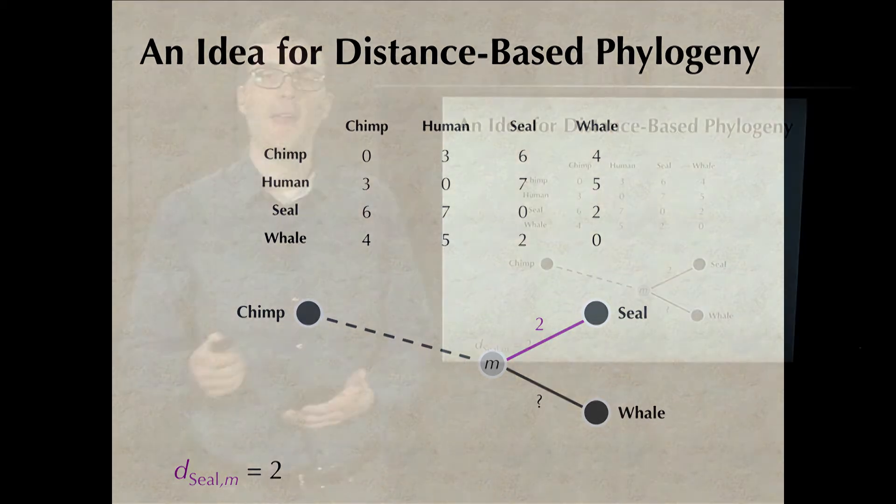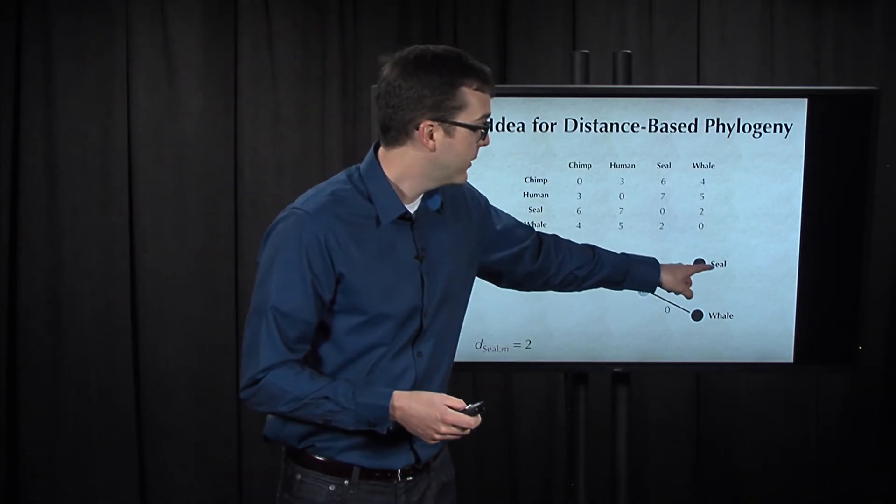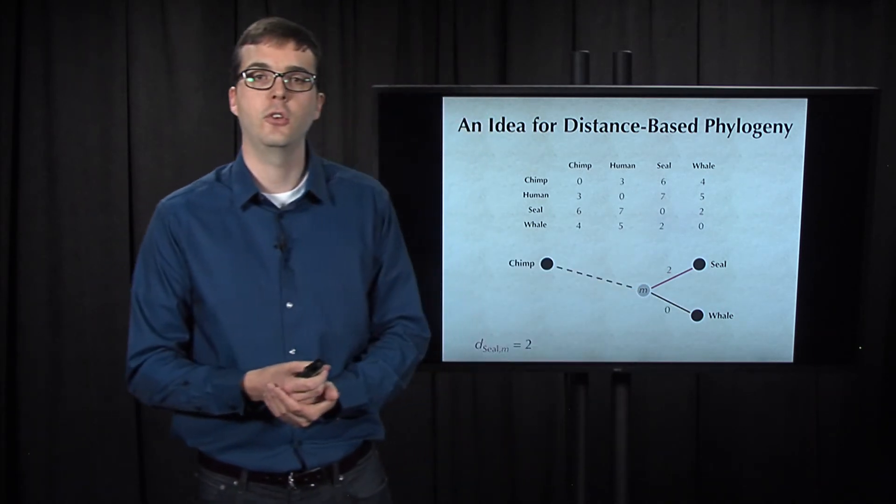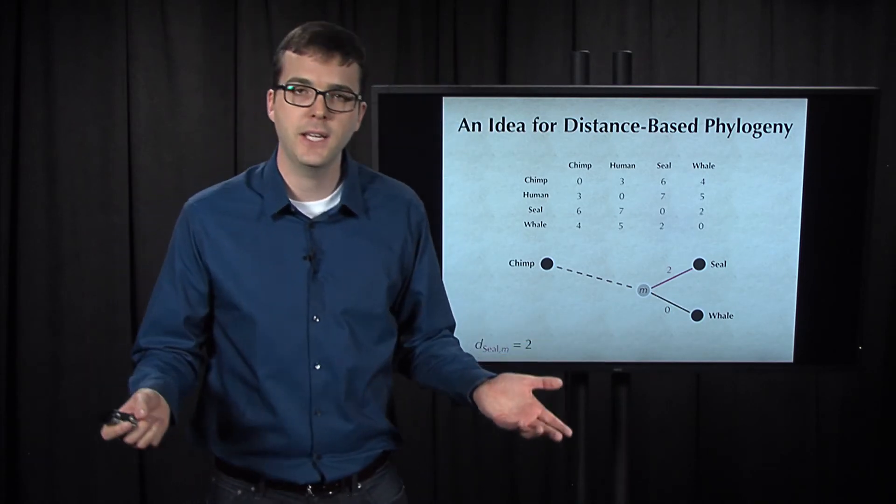So now that we know that, we can now fill in that because the distance from seal to whale is 2 and the distance from seal to its parent is 2, we know that the distance from whale to m is now automatically equal to 0.